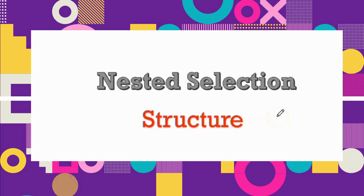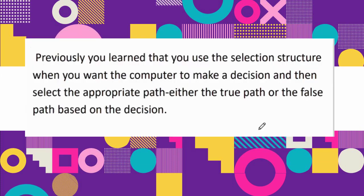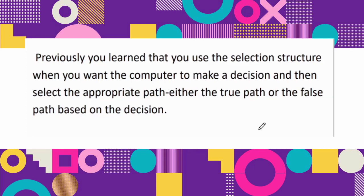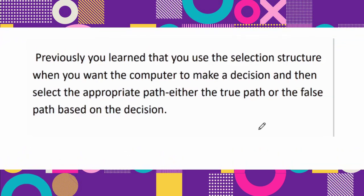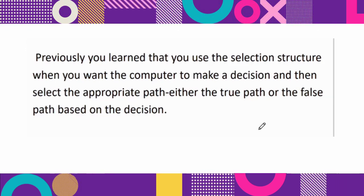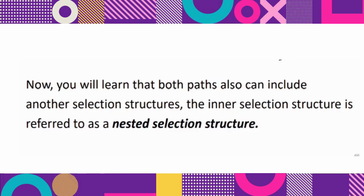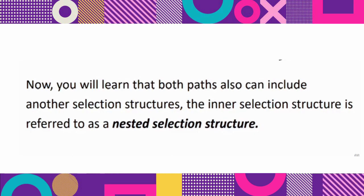Hello everyone, today we will discuss the last part of the selection structure: nested selection. Previously you learned that you use the selection structure when you want the computer to make a decision and then select the appropriate path — either the true path or the false path — based on the decision. Now you will learn that both paths can also include another selection structure. The inner selection structure is referred to as a nested selection structure.